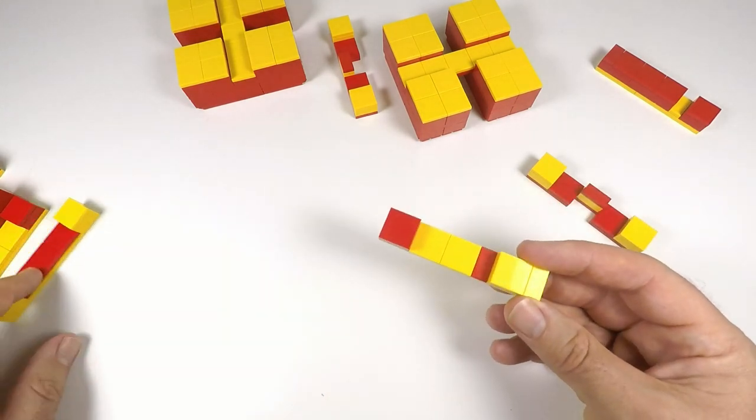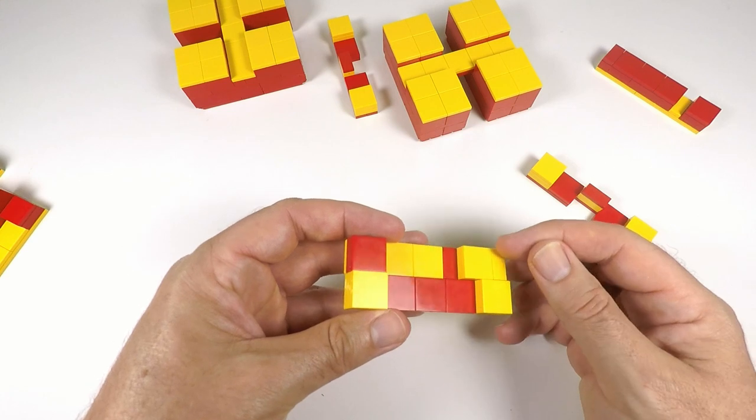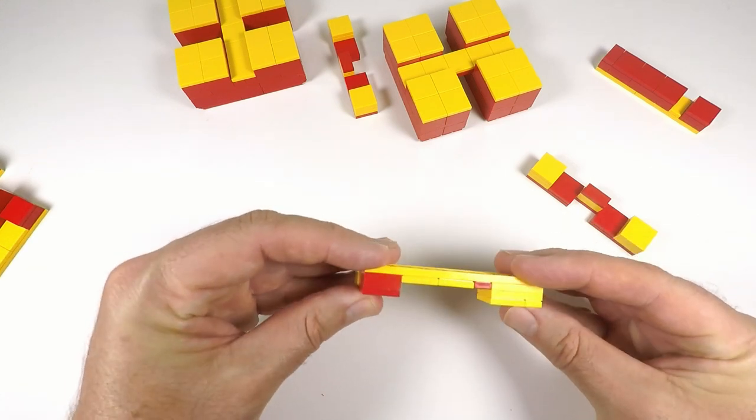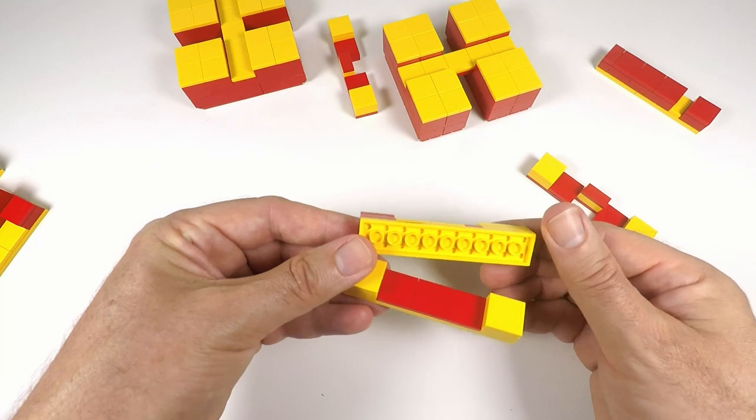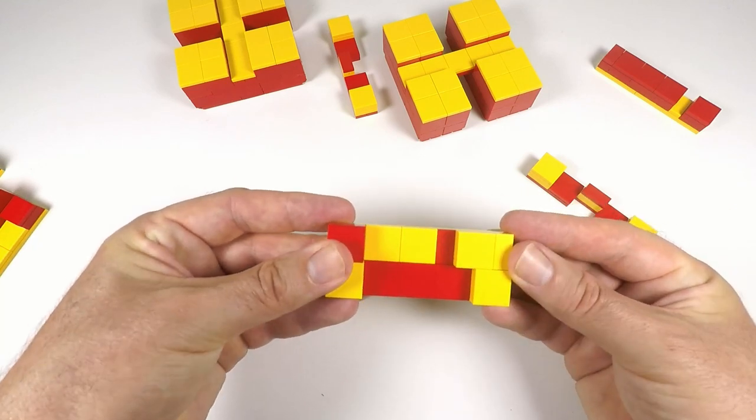We're going to need two of those. We're going to do one that's similar to that. This time, we're actually going to have one more 1x2 here, just a little bit offset. Again, it's a 2x10 plate at the base, just made a little bit differently.